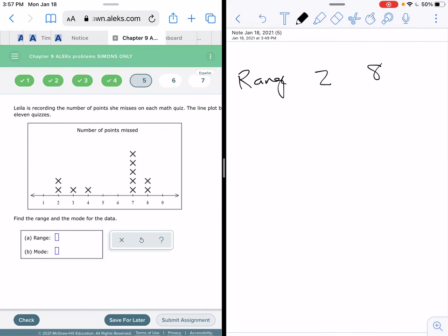So in order to find my range you subtract the smallest from your largest value. So you go 8 minus 2 and you get 6.